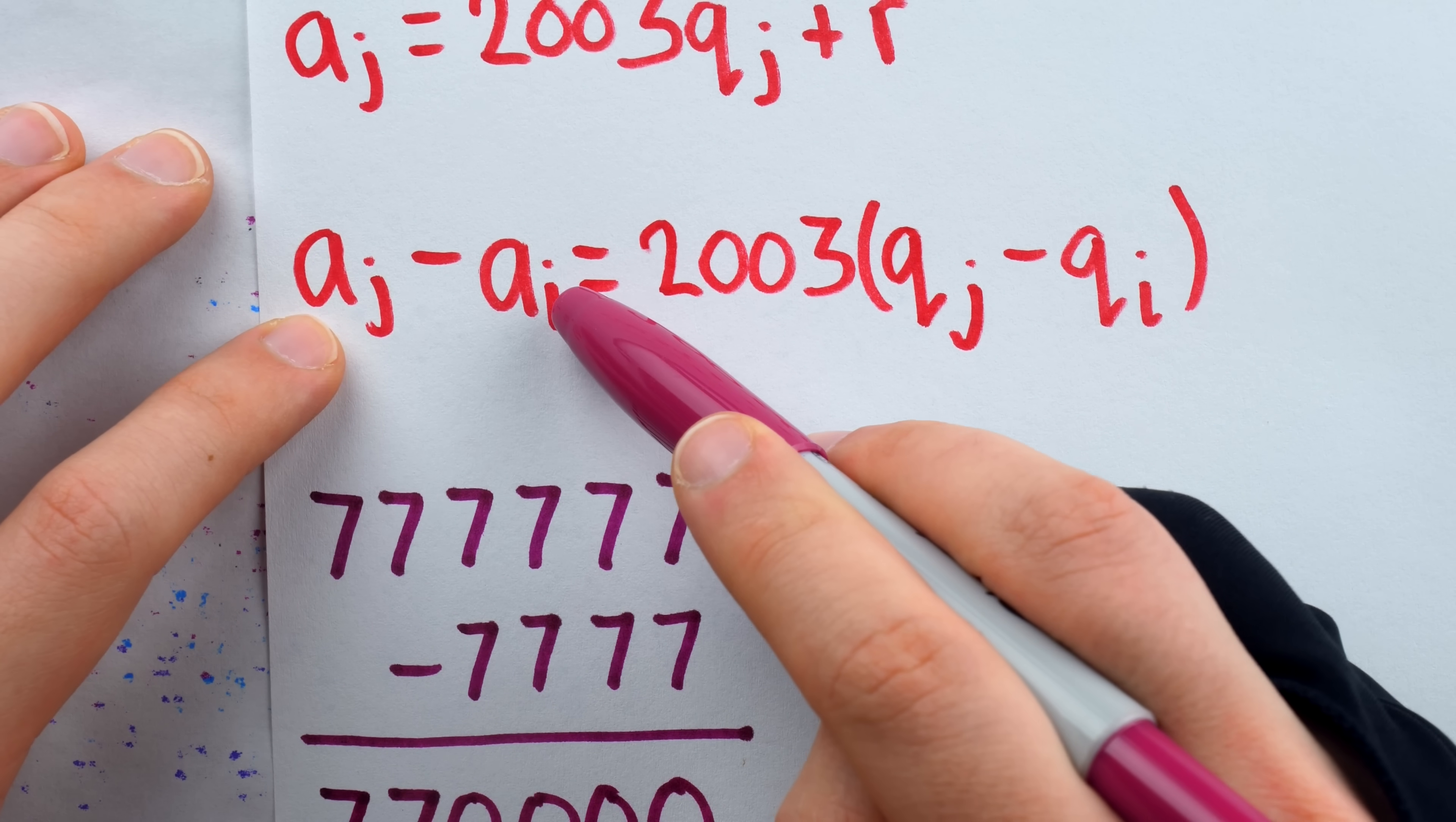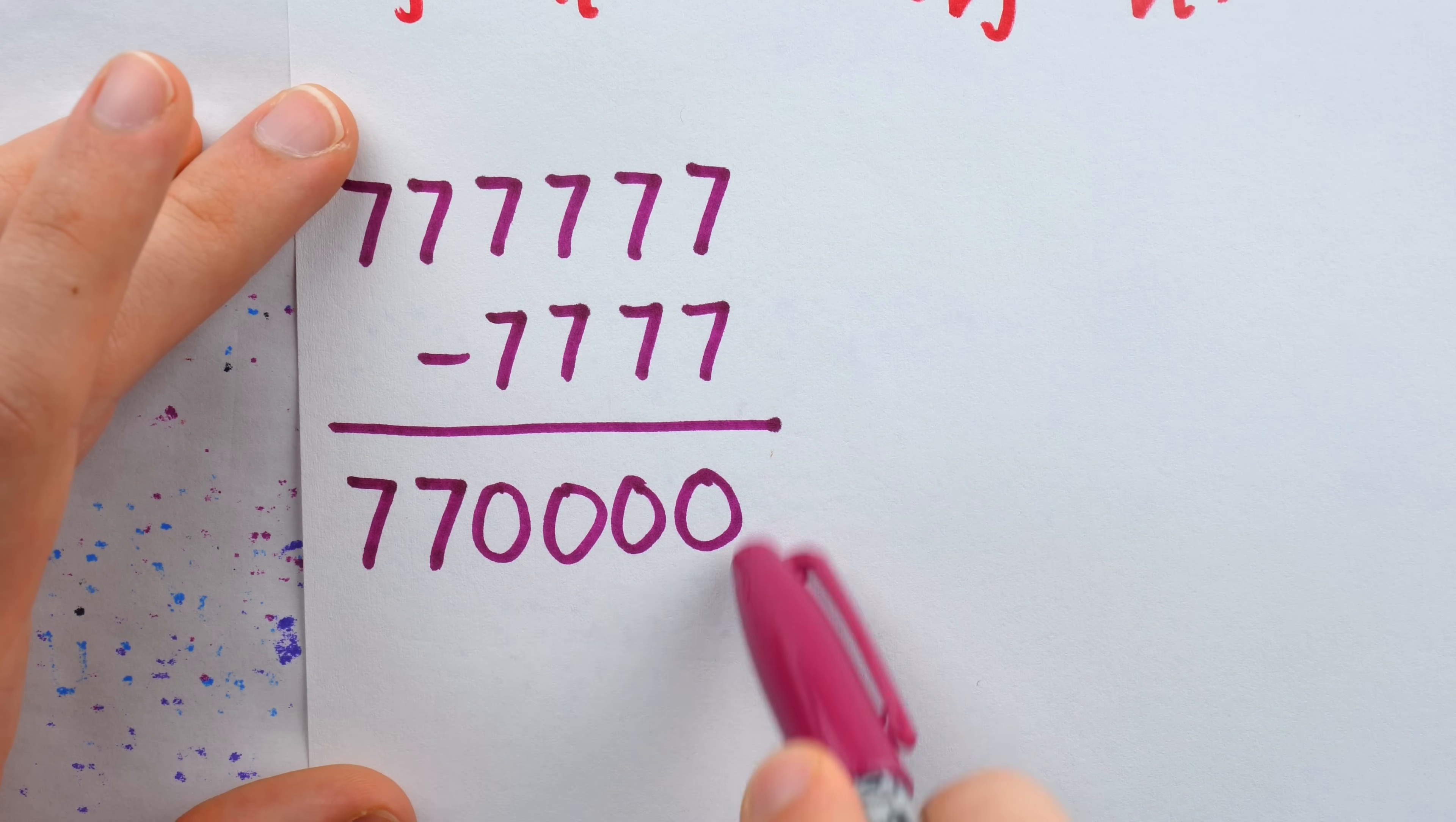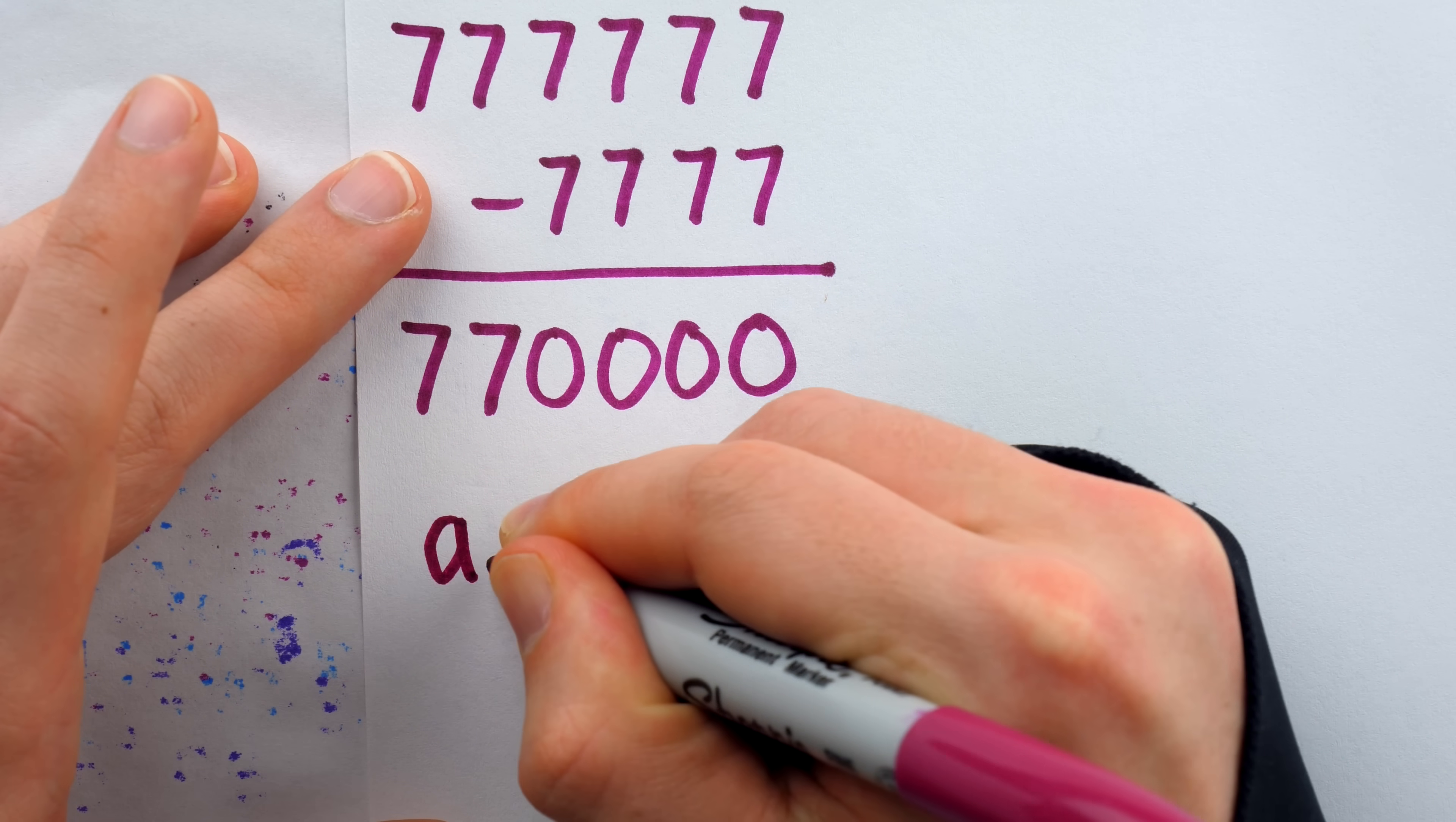Again, we don't know what A_j and A_i are, but whatever they are exactly, the subtraction looks like this. But we then see from this form that there's a very simple way to write what A_j minus A_i looks like, a way that is both general and illuminating.